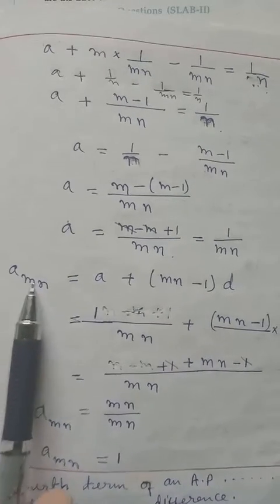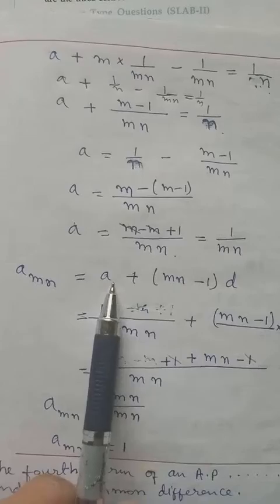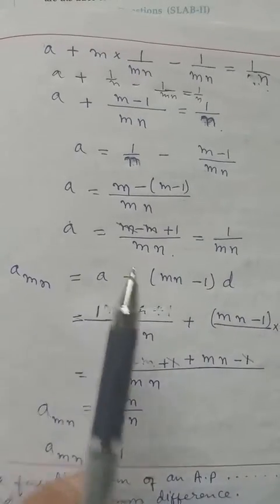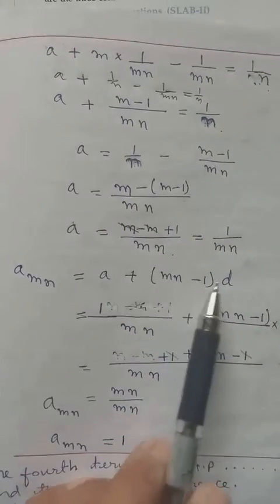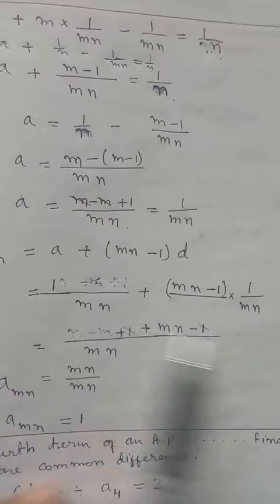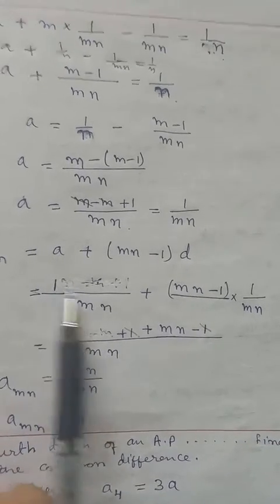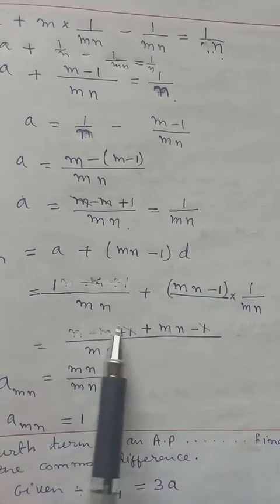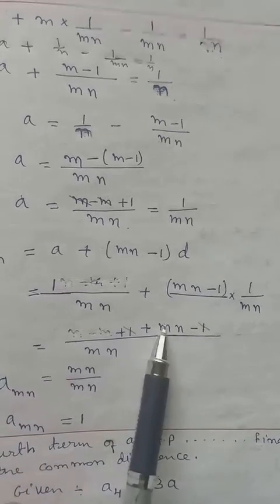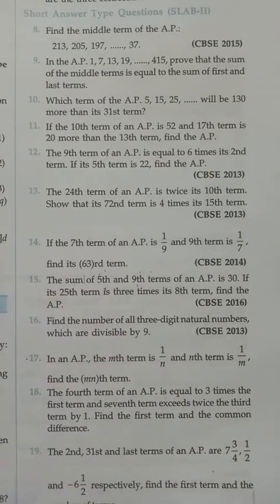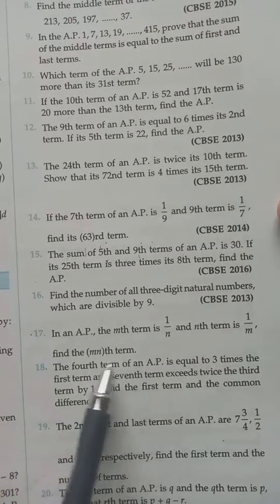We now find the mnth term. Using the formula with n replaced by mn: a + (mn−1)d = 1/mn + (mn−1)×(1/mn). Taking 1/mn common: 1/mn × (1 + mn − 1) = 1/mn × mn = 1. So the required term is 1.